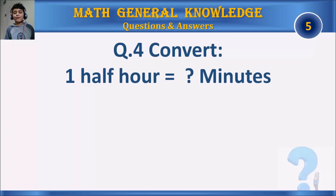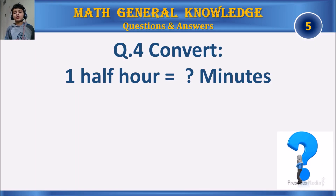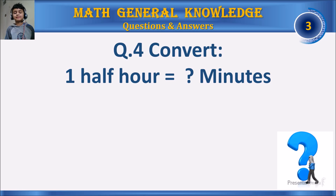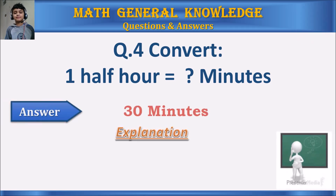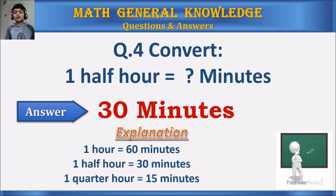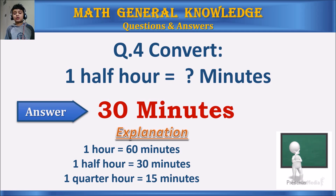Question 4: Half an hour is equal to how many minutes? Your time starts. The answer is 30 minutes. 1 hour is equal to 60 minutes, half an hour is equal to 30 minutes, and a quarter of an hour is equal to 15 minutes.